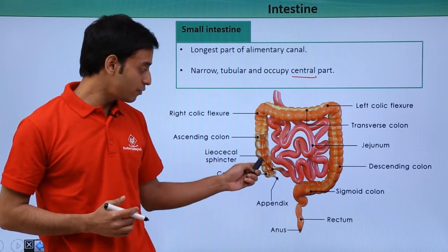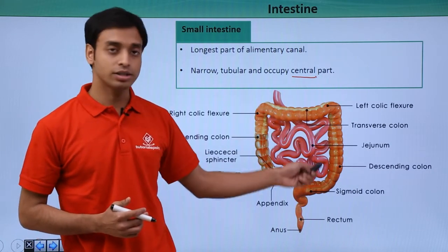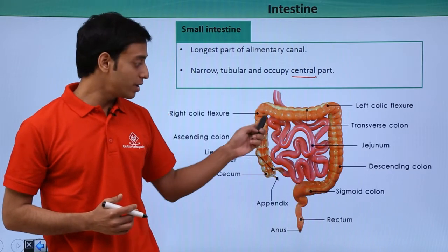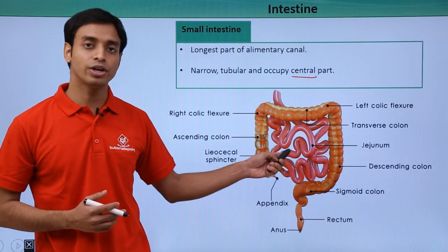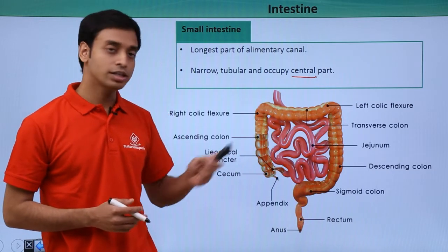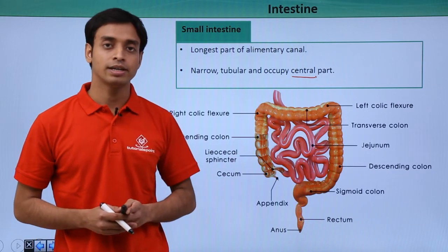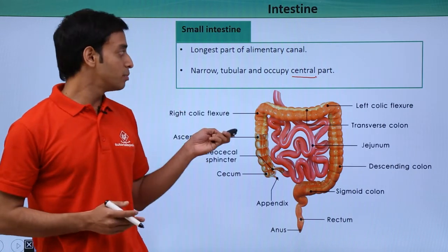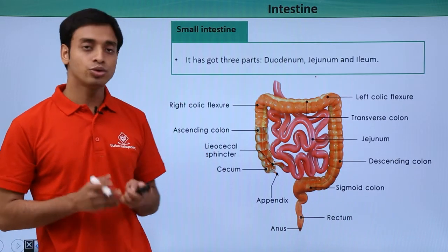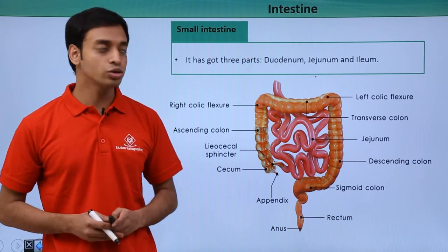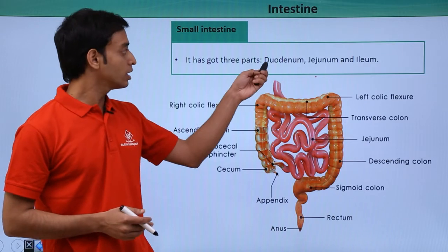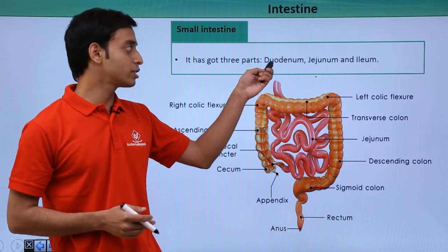As you can see here, the red tubular structure is the small intestine, followed by the large intestine. The small intestine is divided into three important parts.